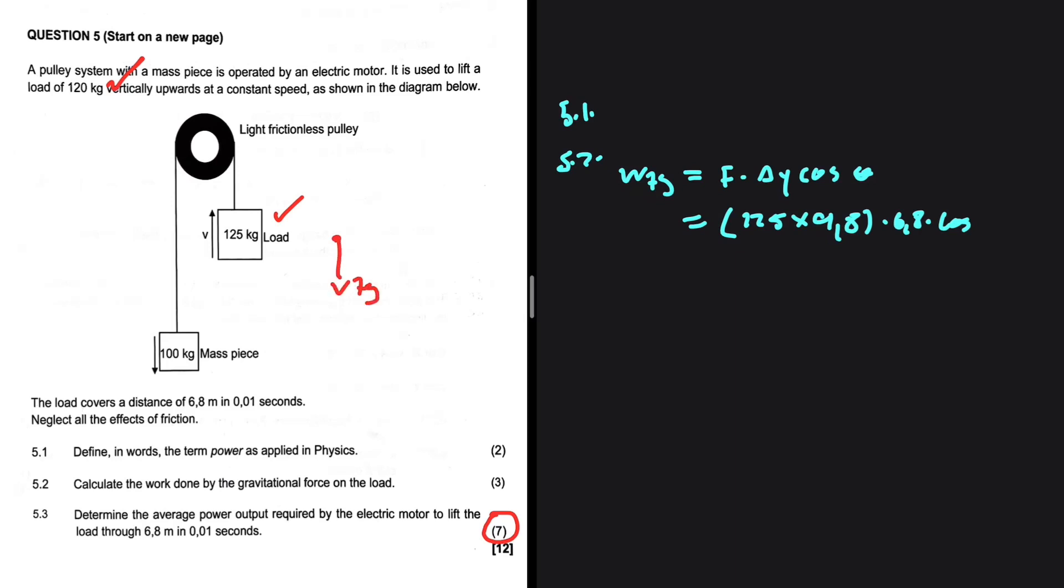Well, gravity is acting downwards obviously, but the load is moving upwards, so we have an angle of 180 degrees. If you put that on your calculator, you're gonna get minus 8330 joules as the work done by the gravitational force on the load.